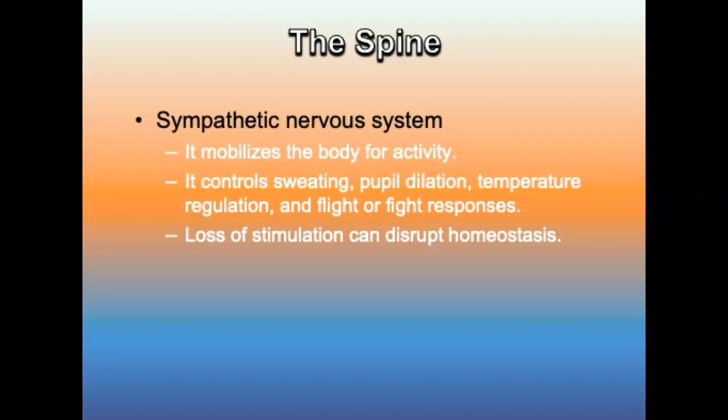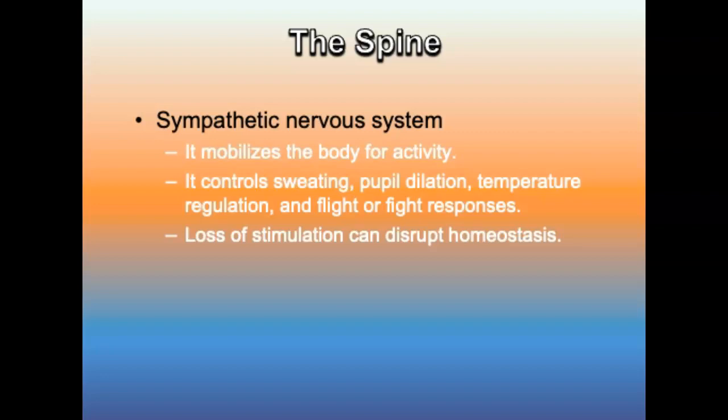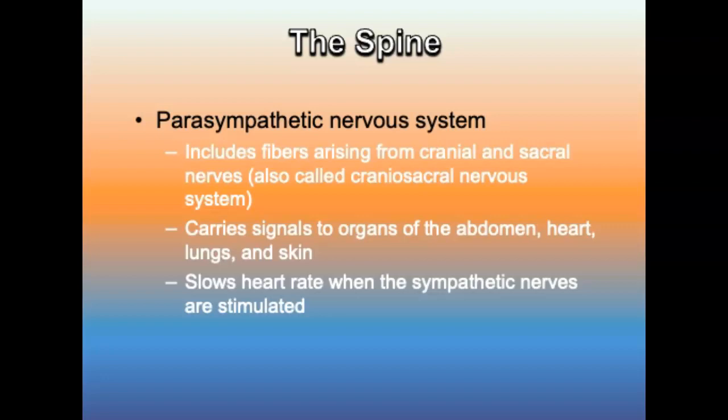The sympathetic nervous system mobilizes the body for activity, transmitting information through the brainstem and spinal cord. It controls sweating, pupil dilation, temperature regulation, and the fight-or-flight response. Loss of sympathetic stimulation can disrupt homeostasis, leaving the body poorly equipped to deal with environmental changes. The parasympathetic nervous system includes fibers arising from the cranial and sacral nerves and carries signals to the organs of the abdomen, heart, lungs, and skin. It slows heart rate in an attempt to control increasing blood pressure when sympathetic nerves are stimulated.